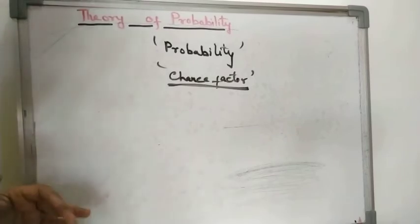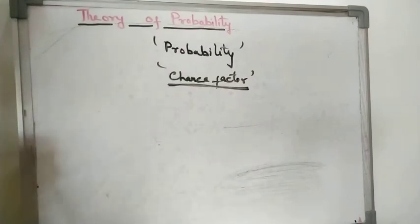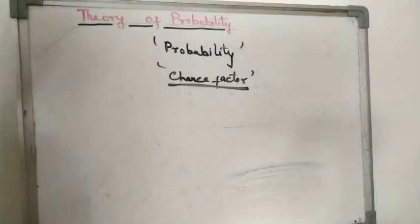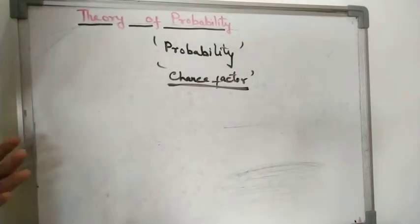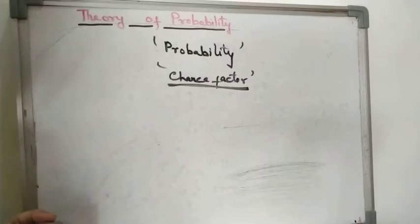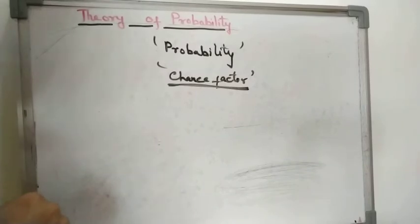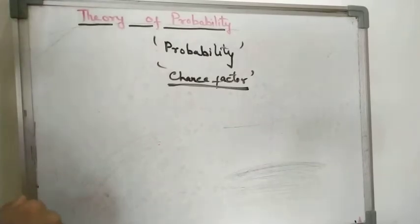Probability is the numerical measure of uncertainty. The theory of probability is the main branch of statistics — it is the science of providing a numerical measure to the uncertainty that prevails in various events we encounter in our day-to-day life. Probability may be defined as the science that deals with uncertainties and helps us make decisions even in the midst of uncertainty.